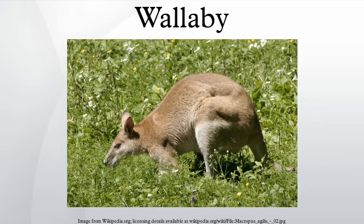Adult male wallabies are referred to as bucks, boomers, or jacks. An adult female wallaby is known as a doe, flyer, or jill. A group of wallabies is called a court, mob, or troop.